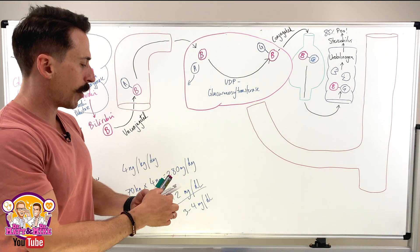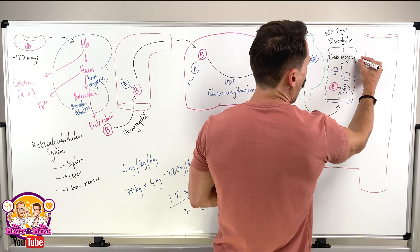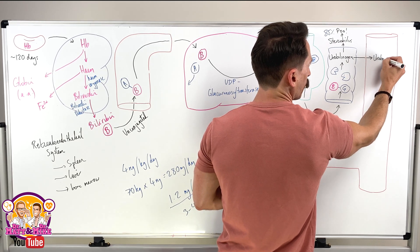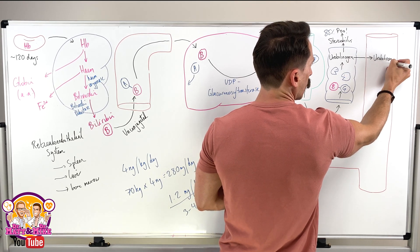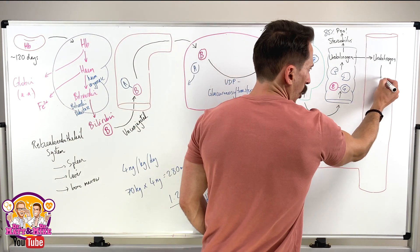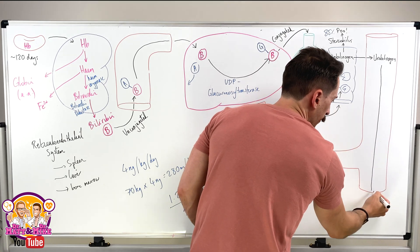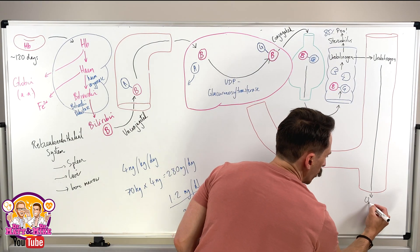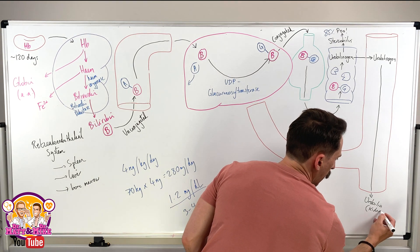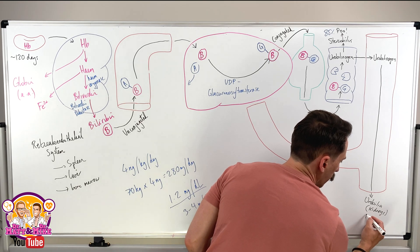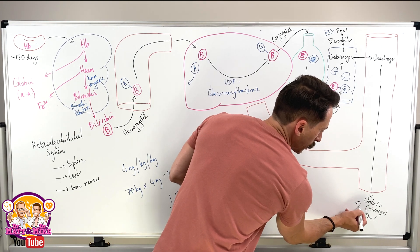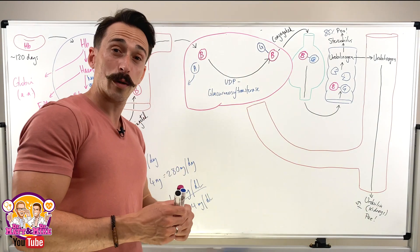But what we'll find is that this urobilinogen can actually get absorbed into the bloodstream. What does it do once it's in the bloodstream now? Well, a couple of things. It can either go to the kidneys, where it turns into urobilin. And what do you think our kidneys are going to do with it? We're going to pee it out. And this is around about 5% of our bilirubin that this happens to.